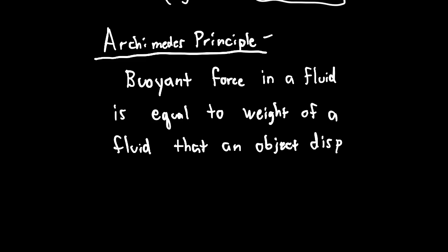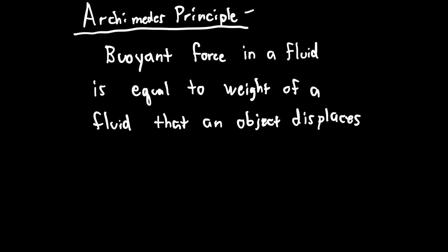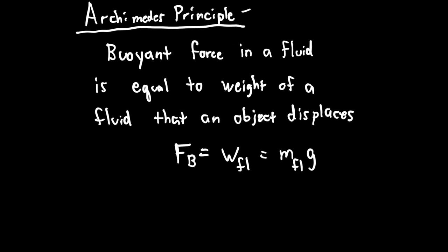The easiest example is taking a bath. When you get into the bathtub, the water level rises. If you measure the amount of water level that rose, that would be your weight. So the buoyant force Fb equals the weight of fluid displaced, which is the mass of fluid you displaced times the acceleration due to gravity on Earth.